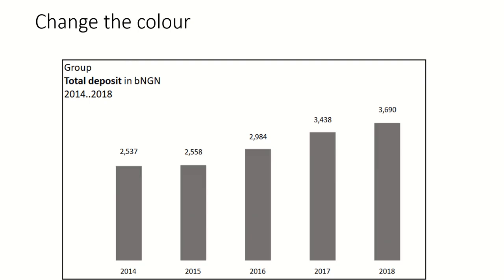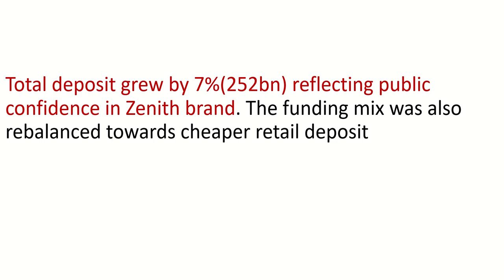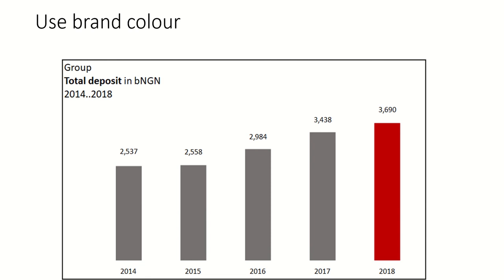This red, red, red color — don't you think we can change it to a normal gray? Now it's much easier to read and not straining on the eye. But how do we insert brand color? The insight here is: total deposits grew by seven percent, reflecting public confidence in the Zenith brand. That means we're talking about the current year, which is 2018 — the last bar. Since that bar grew by seven percent, we highlight just that one bar with brand color. Doesn't that look better?